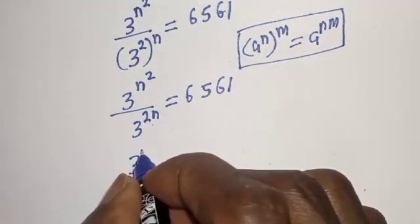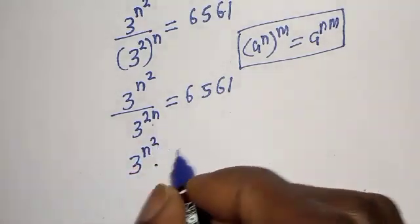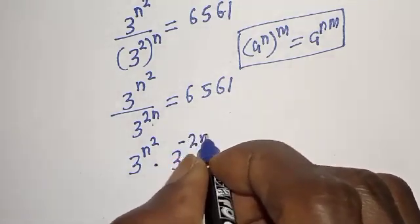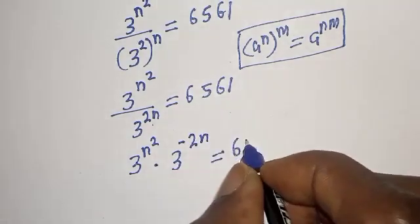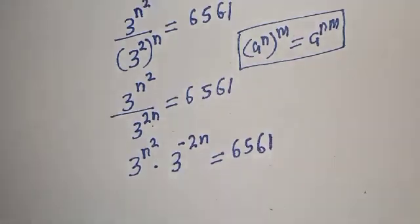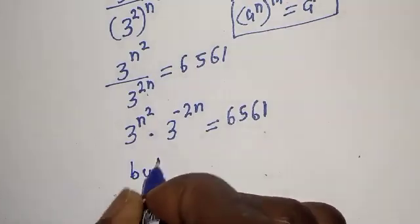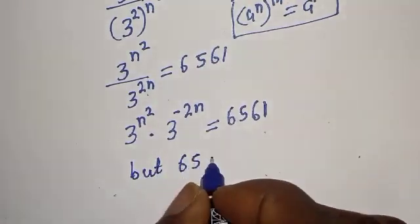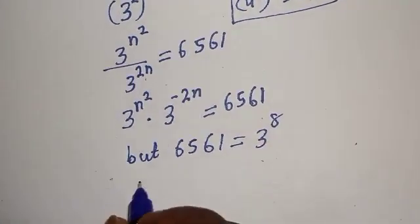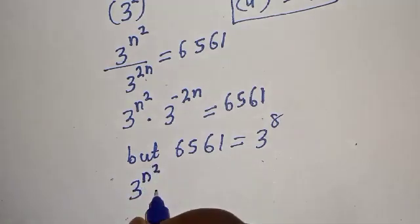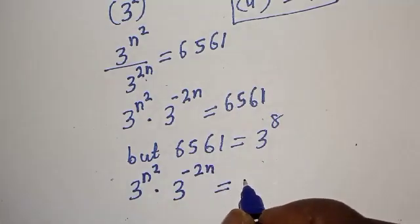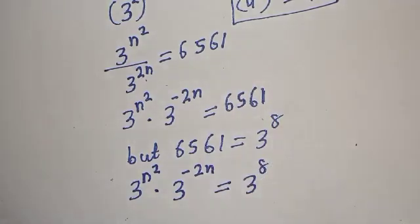So we have 3 raised to power n squared, multiplied by 3 raised to power minus 2n, equals 6561. Now, 6561 is equal to 3 raised to power 8. So we have 3 raised to power n squared, multiplied by 3 raised to power minus 2n, equals 3 raised to power 8.